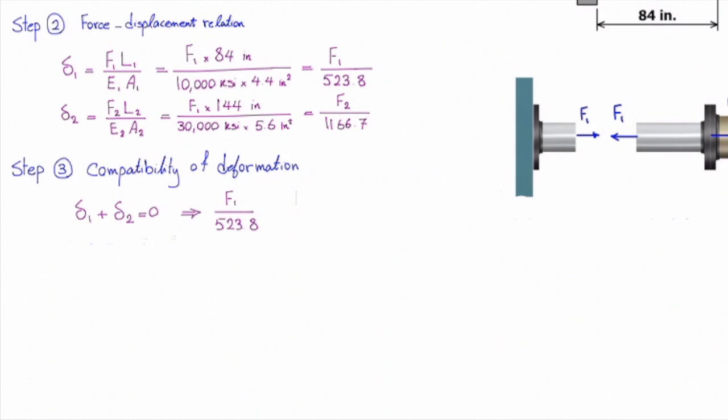So plug the values. F1 divided by 523.8 plus F2 divided by 1166.7 equals zero. And we get one extra equation, which is F2 equals negative 2.227 times F1.